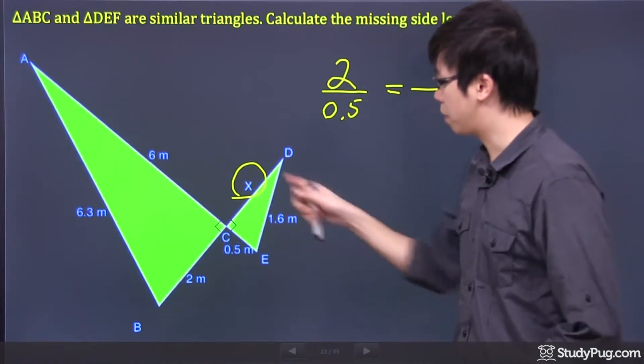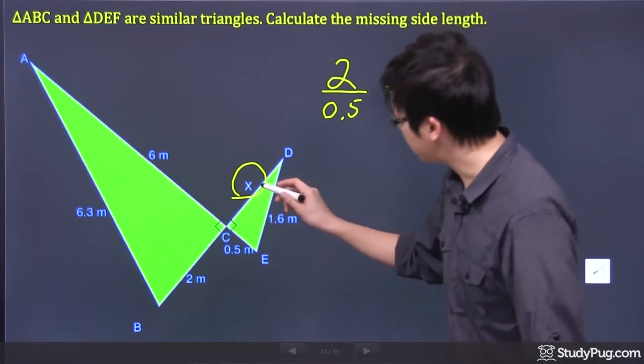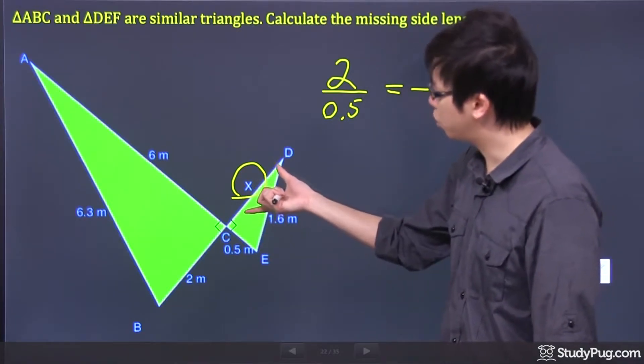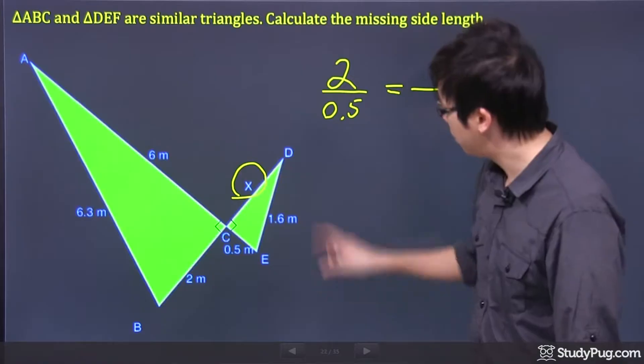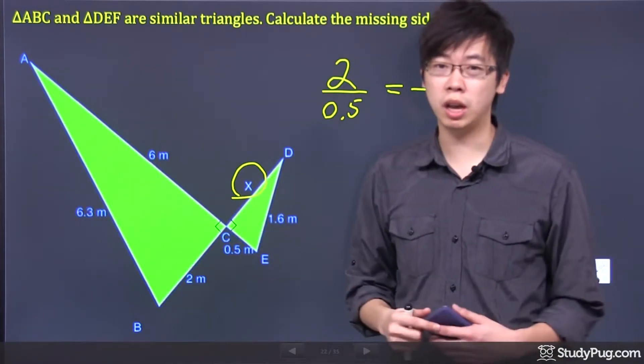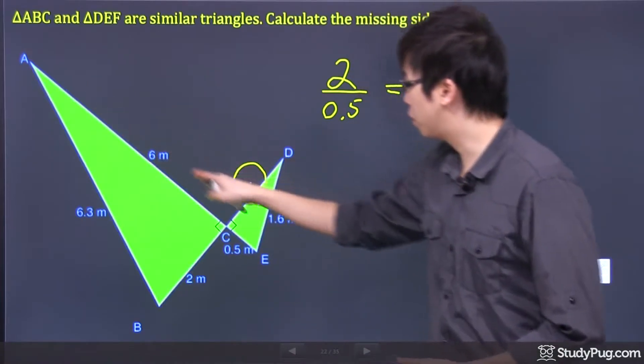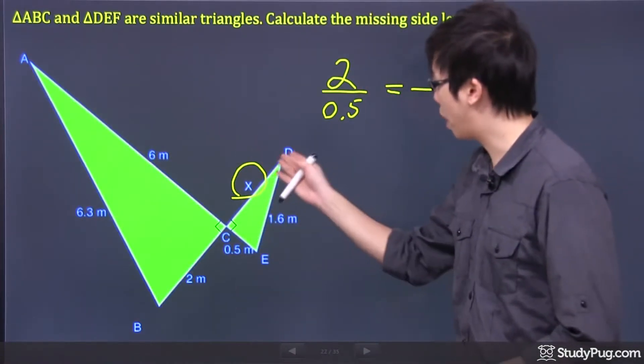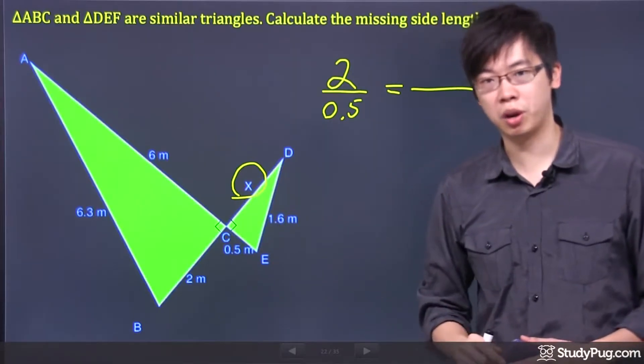Then I'm going to try to figure out my missing x right here. This missing x corresponds to the 6 over here, because the hypotenuse and the hypotenuse of the two triangles will go together. The 6 over here on my bigger triangle will match the x here for my little triangle.